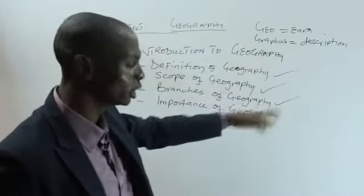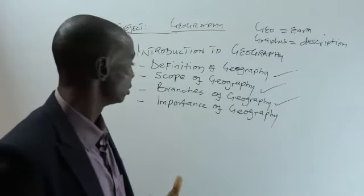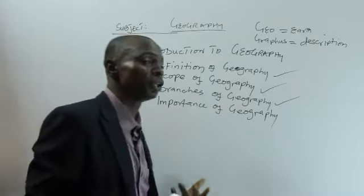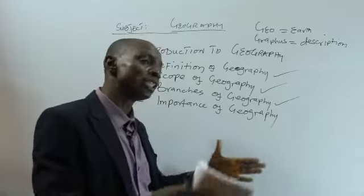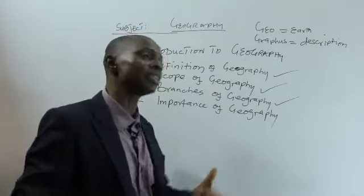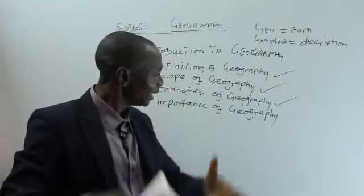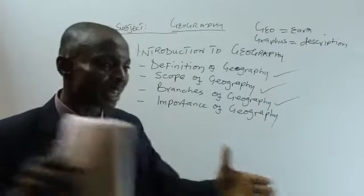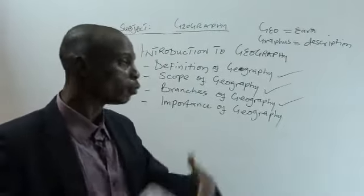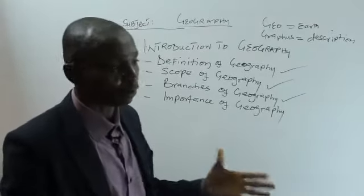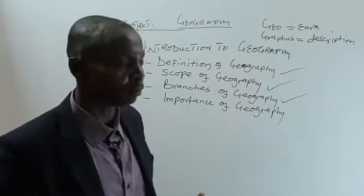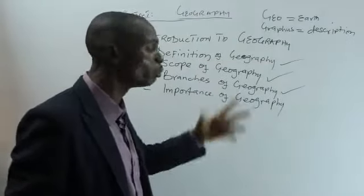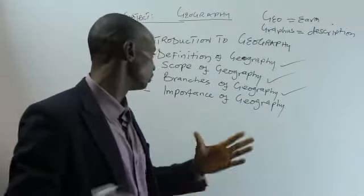When you study geography especially at university level, you will specialize in an aspect — either physical or human geography. Under physical geography we have biogeography and geomorphology. Under human geography, we talk about population planning and urban and regional planning. So geography, as we said from the scope, is very versatile, very broad, and very wide.